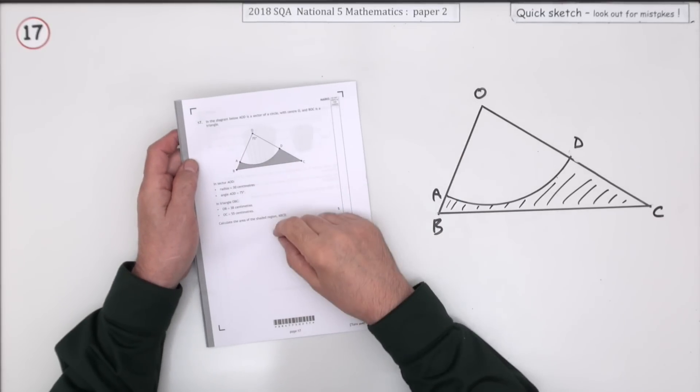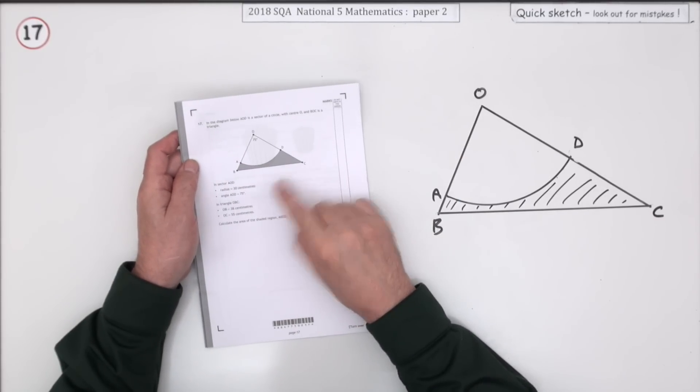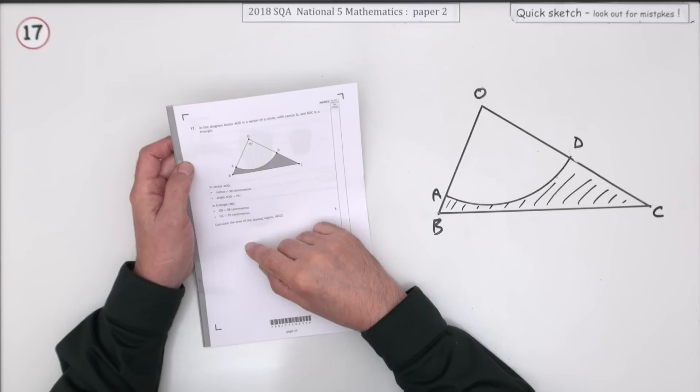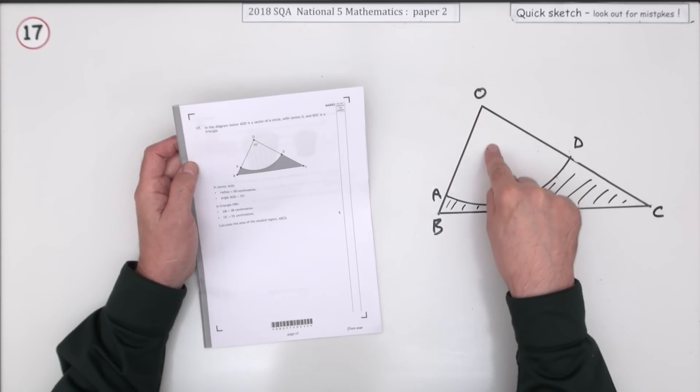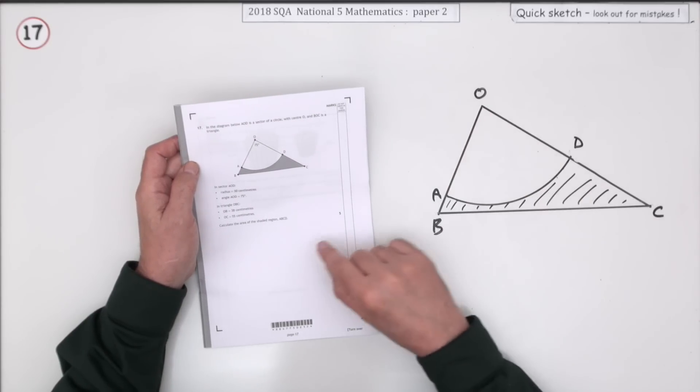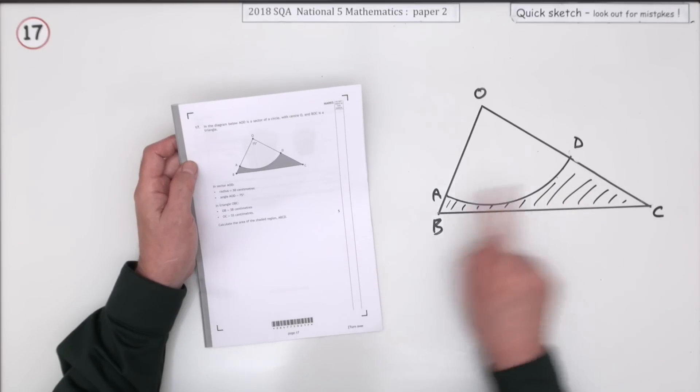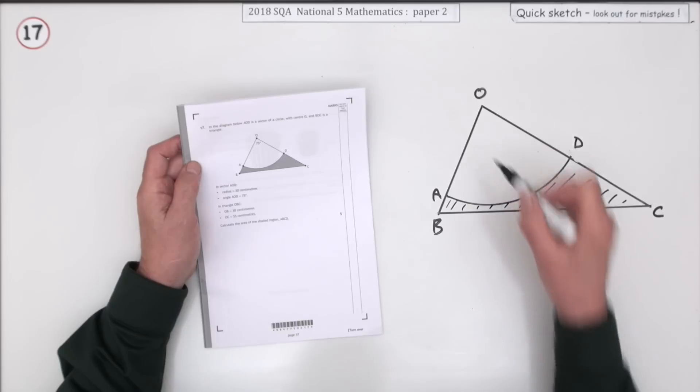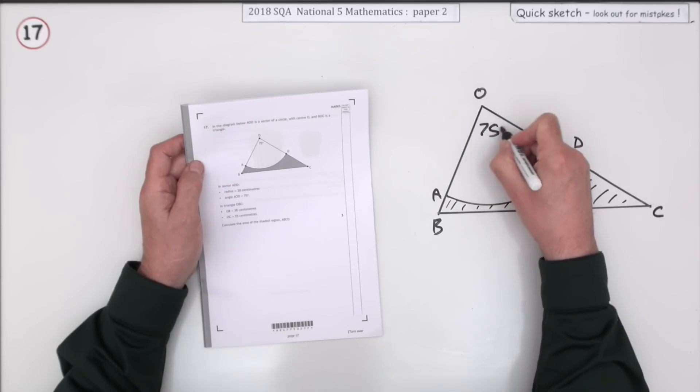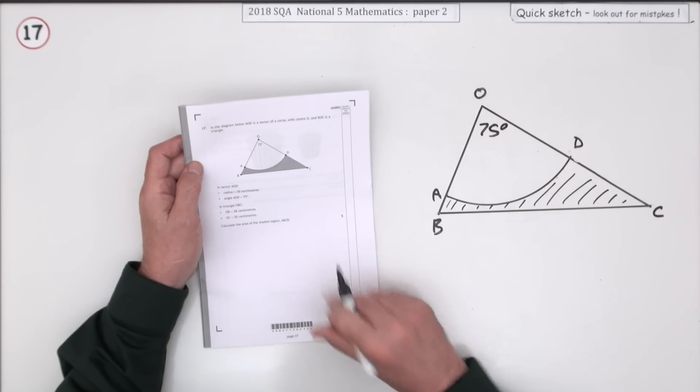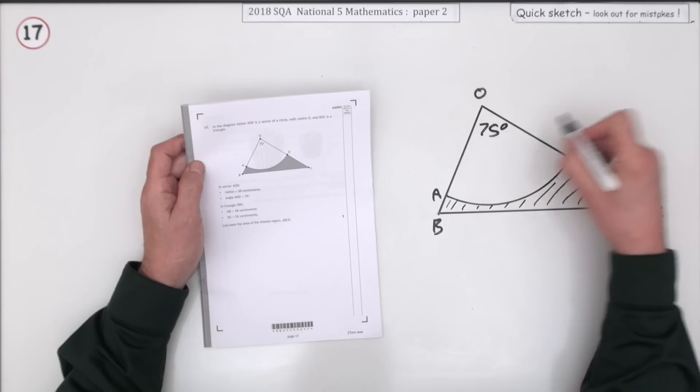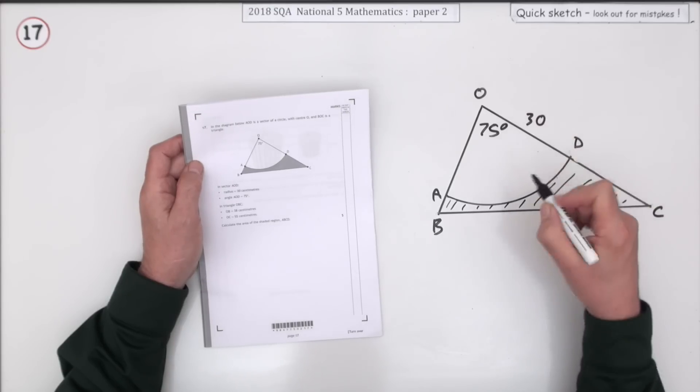Number 17 from paper 2 of the 2018 National 5 Maths. We've got an area question here with a sector of a circle inside a triangle. You need to find the area of the shaded region outside of the sector.